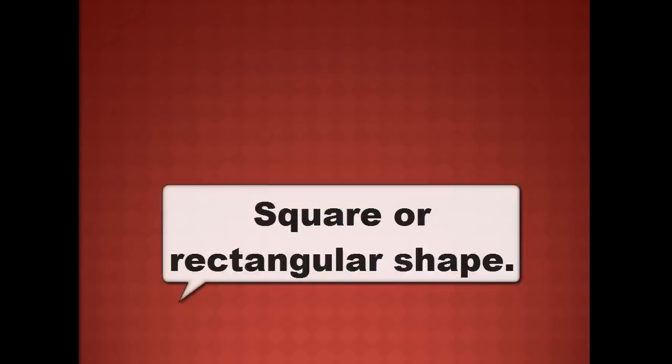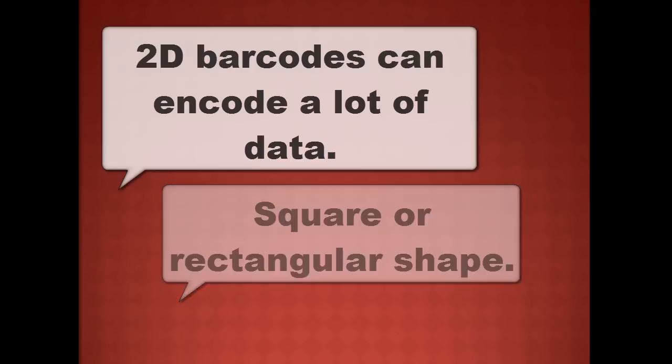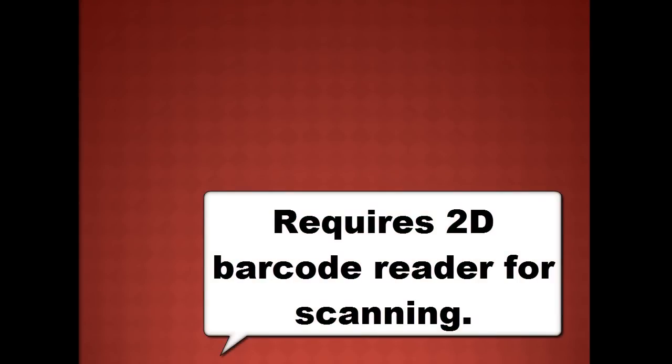Two-dimensional barcodes are square or rectangular shaped barcodes and can hold much more data than linear barcodes. Some can hold up to 1300 characters and require a 2D barcode scanner to scan them. With the same amount of data, a 2D barcode will produce a much smaller barcode than a linear barcode.